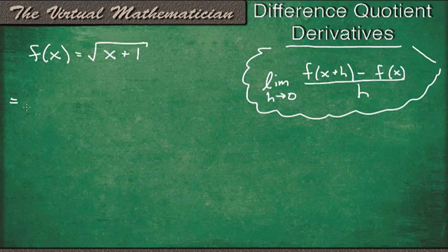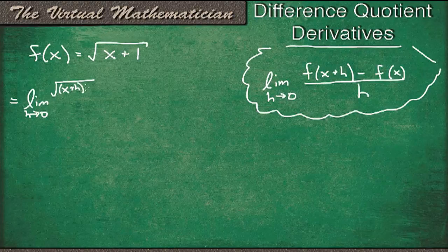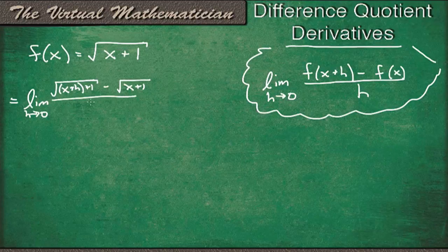So I'll set it up for us. So we'll get the limit as h goes to 0 of f of x plus h. So that's going to be the square root of x plus h plus 1 minus the square root of x plus 1, since that's just f of x, all over h.